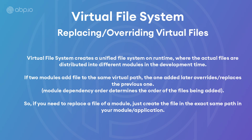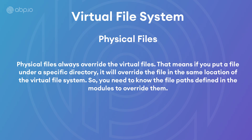The virtual file system creates a unified file system at runtime, where the actual files are distributed into different modules at development time. If two modules add a file to the same virtual path, the one added later overrides the previous one. So if you need to replace a file of a module, just create the file in the exact same path in your application or module and it'll simply override it. Physical files always override virtual files — meaning if you put a file under the physical directory, it overrides the file in the same location of the virtual file system.